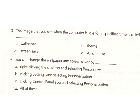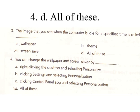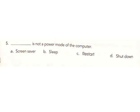Question 3 options: A) Wallpaper, B) Theme, C) Screen Saver, D) All of these. Answer: C, Screen Saver. Question 4: You can change the wallpaper and screen saver by: A) Right-clicking the desktop and selecting Personalize, B) Clicking Settings and selecting Personalization, C) Clicking Control Panel app and selecting Personalization, D) All of these. Answer: D, All of these. Question 5: Which is not a power mode? A) Screen Saver, B) Sleep, C) Restart, D) Shut Down. Answer: A, Screen Saver.